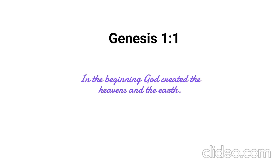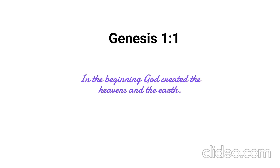We can only guess on how long it has been since this event happened and really it does not matter. The earth was unformed and void, darkness was on the face of the deep, and the Spirit of God hovered over the surface of the water. The Hebrew words translated here as 'unformed and void' are Toho wa Bohu — Toho speaks of confusion while Bohu speaks of emptiness. The Hebrew word Choshek is translated here as darkness but it is not what we normally think of as darkness. It carries evil spiritual overtones as it speaks of blindness, misery, and falsehood.